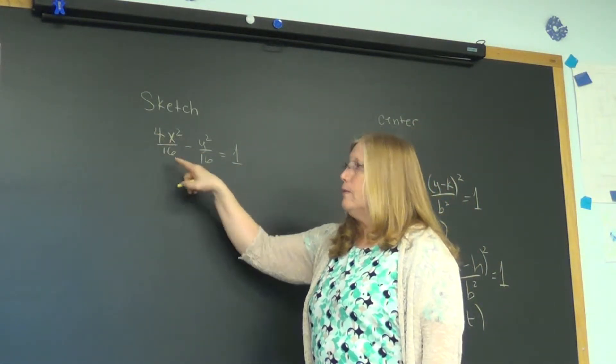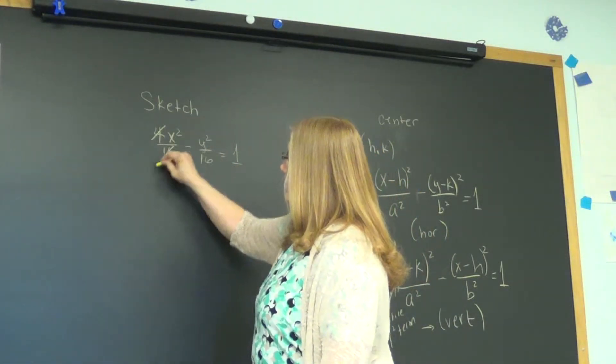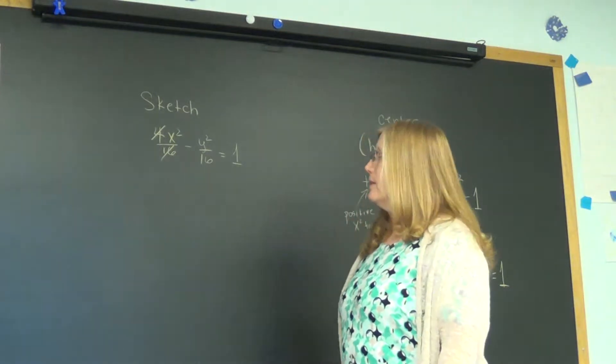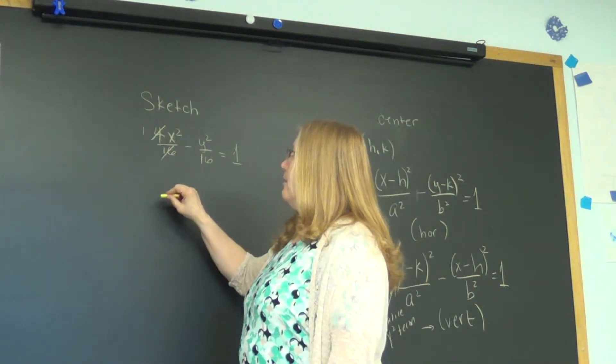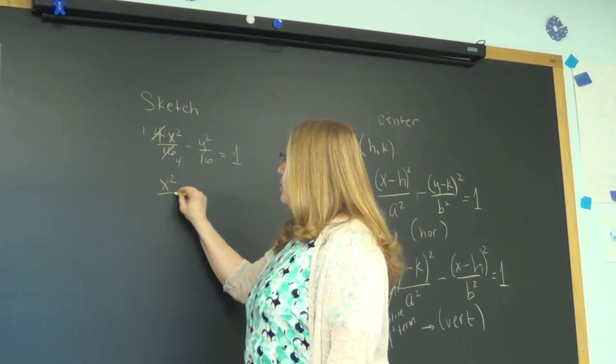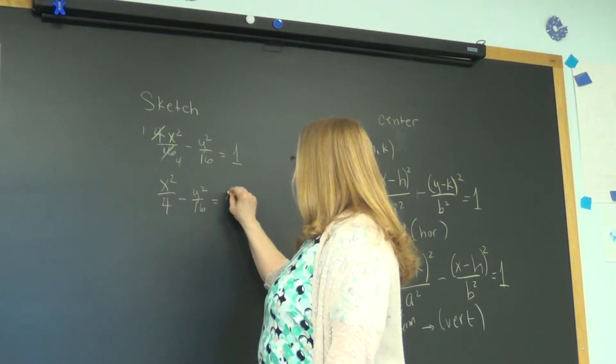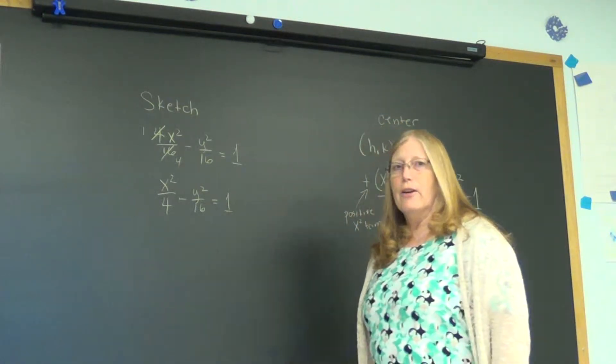All we have to do is move the four, so we can do that by the thing that made the most sense to you when we're doing ellipses. You just reduce, so four goes into itself once and sixteen four times. So we have x squared over four minus y squared over sixteen equals one.